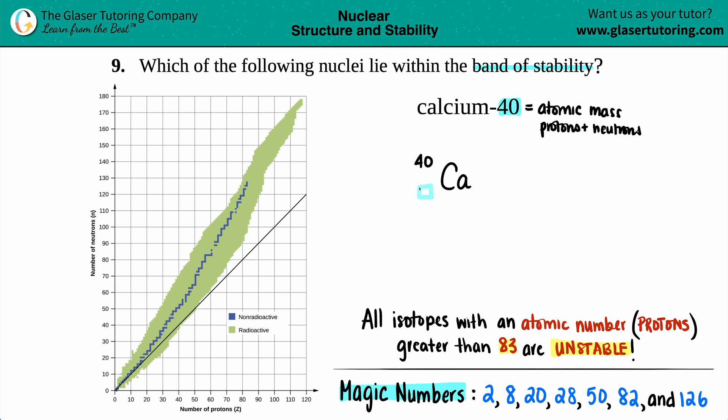Now the number on the bottom is always going to be the atomic number. And the atomic number is always the number of protons. But how are we going to find out what that number is? Well, get your periodic tables out.